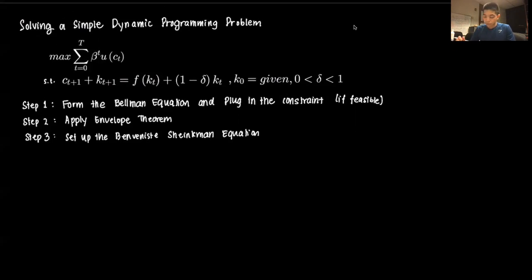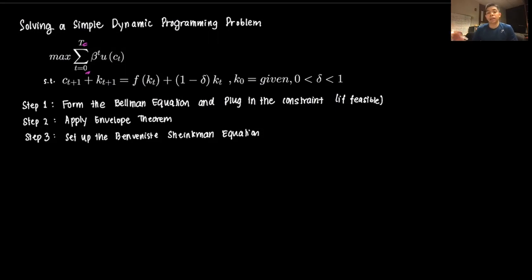We have a problem of maximizing utility over a finite horizon, going from t equals zero until capital T. We have a discount rate beta that discounts lifetime utility given by u, which is a function of some consumption level. It's subject to a resource constraint given below.